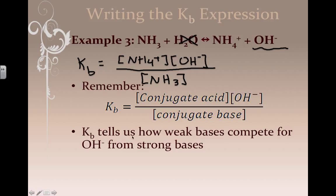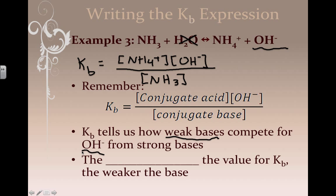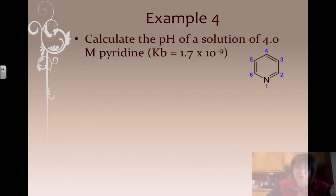The Kb tells us how the weak bases will compete for the hydroxide from a strong base. The smaller the value of Kb, the weaker the base. And the larger the Kb, the stronger the base.